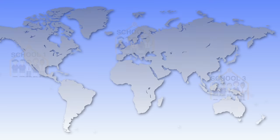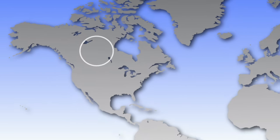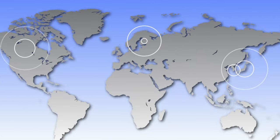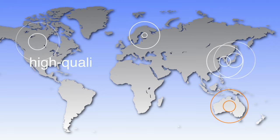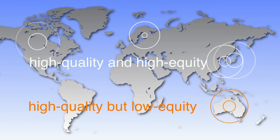We know from comparisons provided by the OECD's Program for International Student Assessment that in high-performing countries such as Canada, Finland, Japan and South Korea, differences in students' levels of socio-educational advantage are less strongly related to differences in their educational achievement than in Australia. Their educational systems are high quality and high equity. Ours are high quality but lower equity, and we should be aspiring to match these countries.